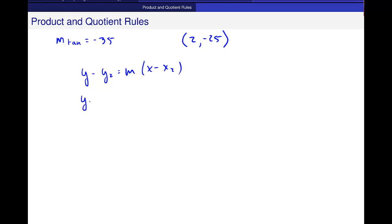So I get y minus negative 25, negative 35 times x minus 2. y plus 25 is equal to negative 35x plus 70, and y is equal to negative 35x plus 70 minus 25, which is 45.